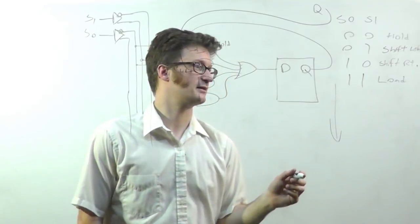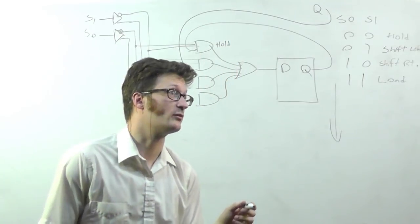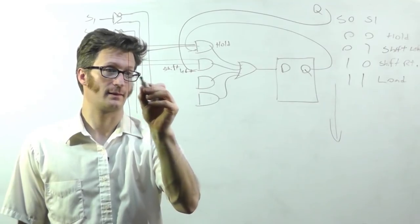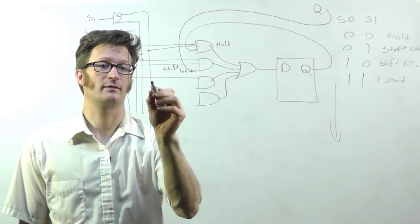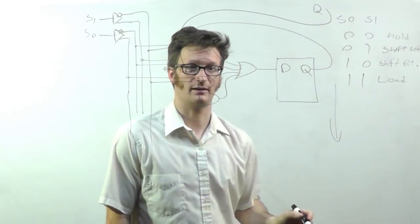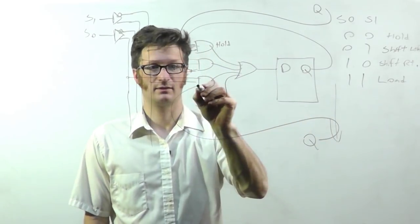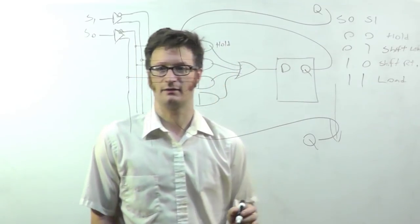And shift right is 1, 0, with 1 being S0. And this one's 0. And I'm taking the Q from this one and bringing it around.